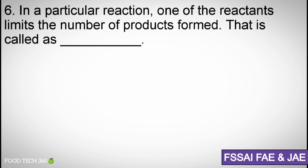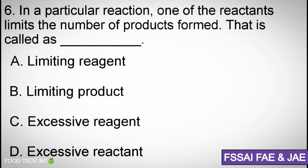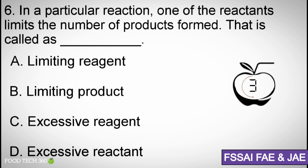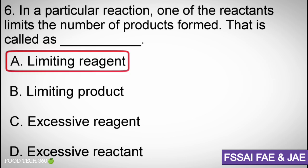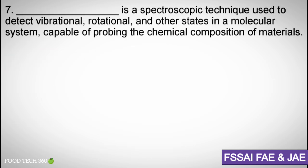Question number six: In a particular reaction, one of the reactants limits the number of products formed — that is called what? Options: (a) limiting reagent, (b) limiting product, (c) excessive reagent, (d) excessive reactant. Correct answer: (a) limiting reagent.